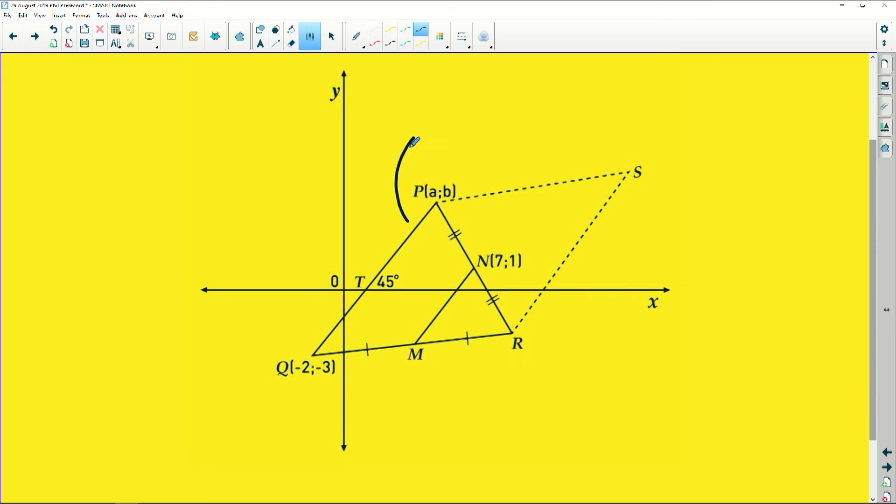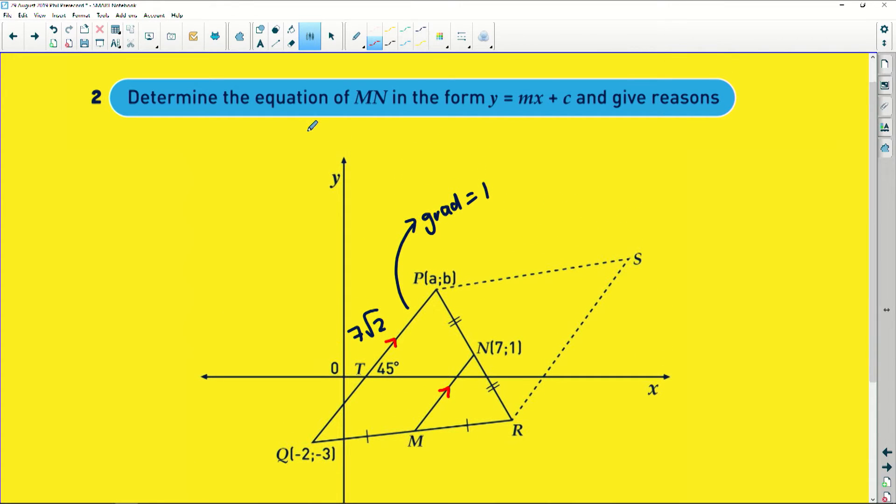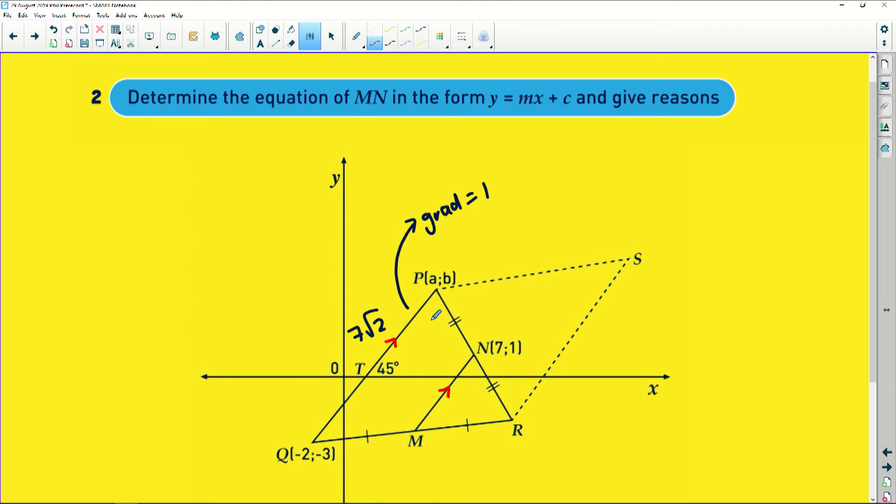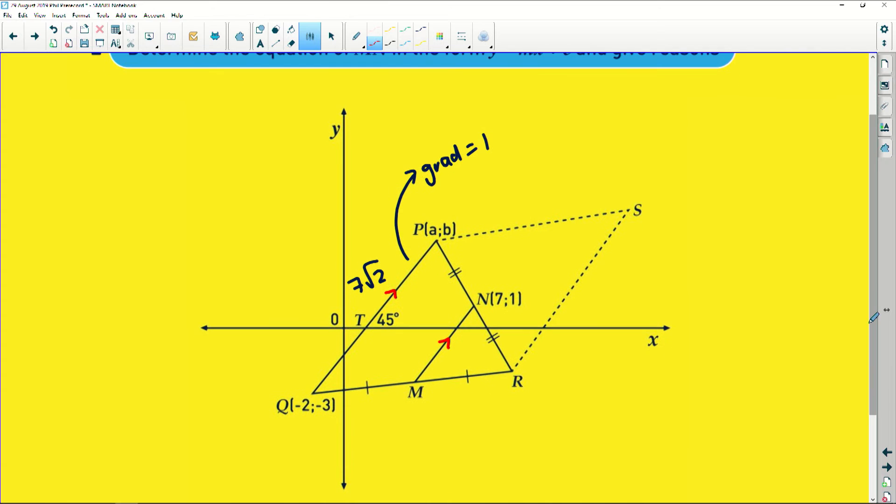So what we can say is gradient equals 1. And remember, this is 7 root 2 units. We can also say that this line is parallel to that line. So the next question says, determine the equation of MN, this line here, in the form y equals Mx plus C. So this is like a really great example of an analytical geometry question because there's so much Euclidean theory in this question, guys. Maths is just one big blob of connection. And that's what you guys don't seem to understand, that every single section that you do relates to everything else.